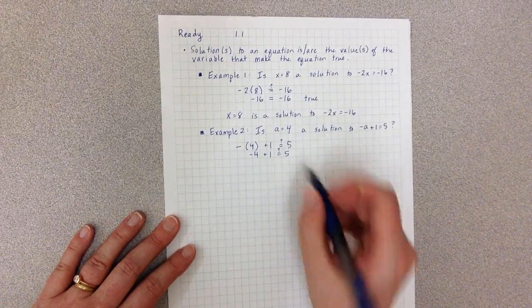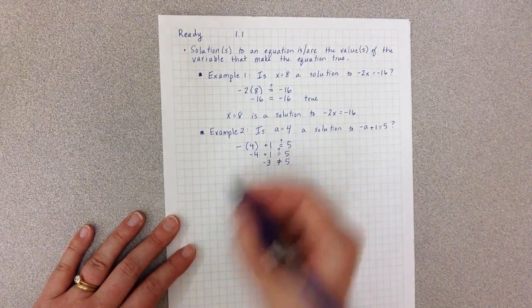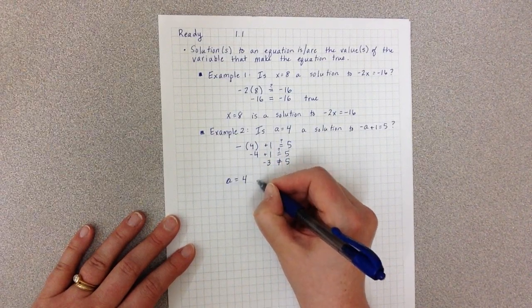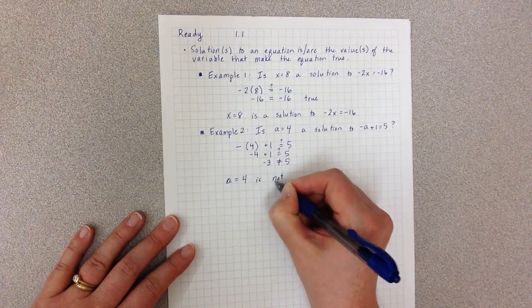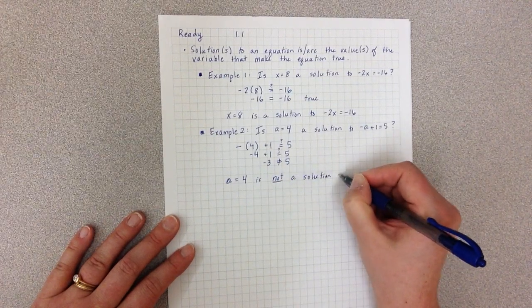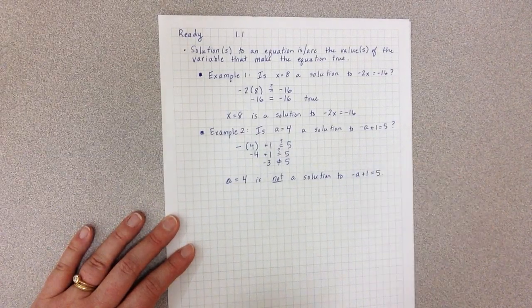Negative 4 plus 1 is negative 3, and it does not equal 5. So we say a equals 4 is not a solution to negative a plus 1 equals 5.